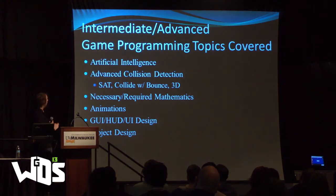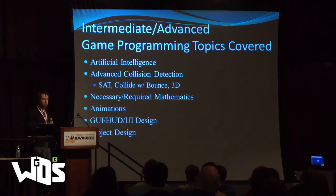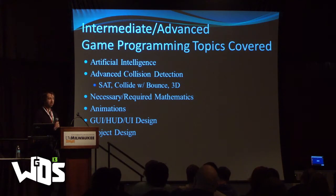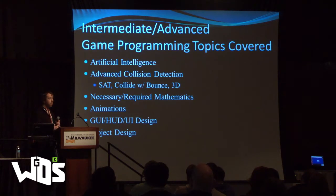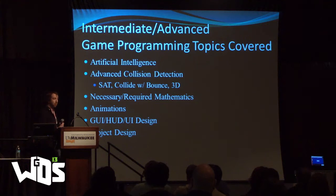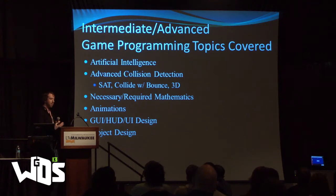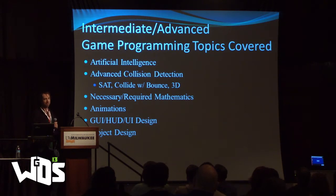As far as intermediate topics go, we cover artificial intelligence, advanced collision detection including separating axis theorem, bounding sphere, circle, and cylinder collision. We also go over basic animations — how you can load a model and get an animated piece to work in code — and we talk about how to actually design these concepts as well.